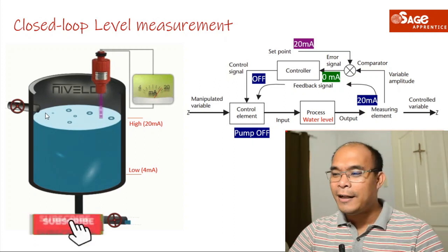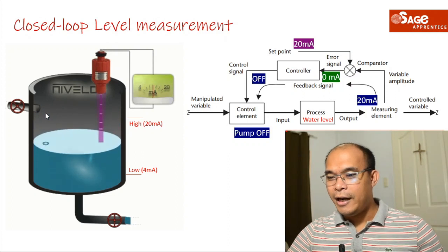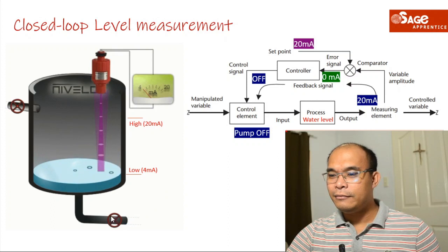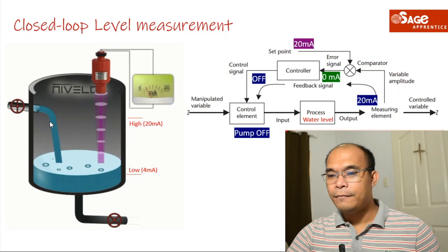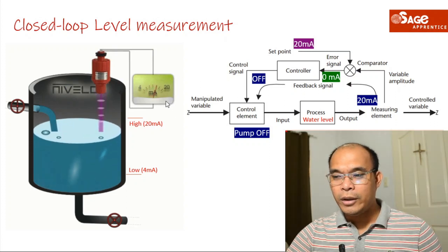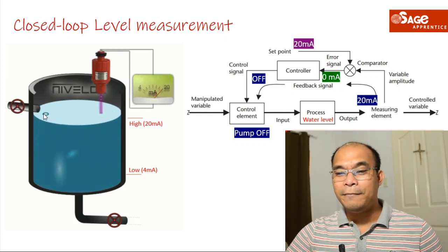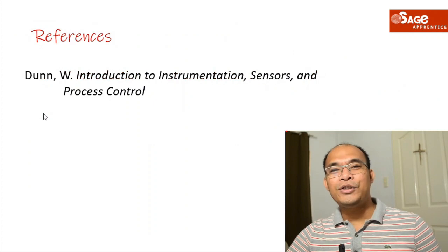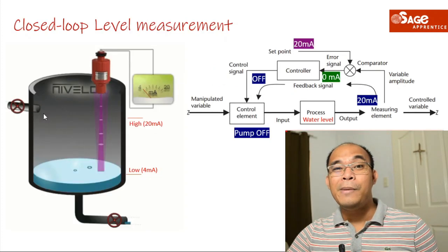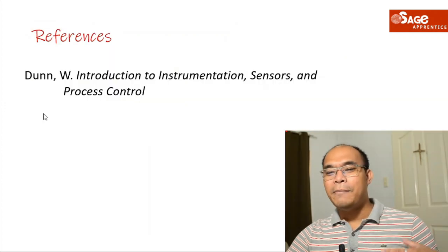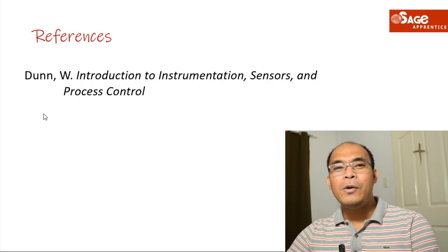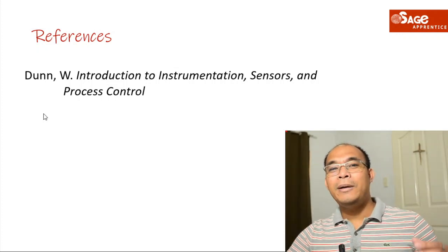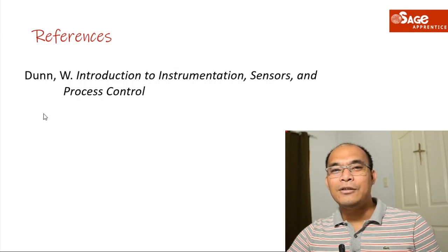When the level reaches 20 mA (full), the valve automatically turns off. That is the basic concept of how level measuring devices are integrated in a closed loop control system. The main reference for this lecture is 'Introduction to Instrumentation, Sensors and Process Control' by William Dunn. For questions or clarifications, please comment below and good luck.